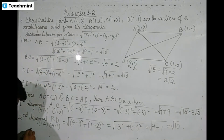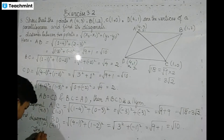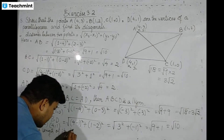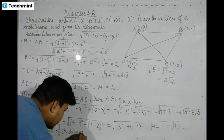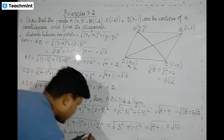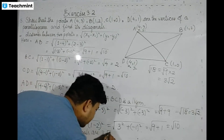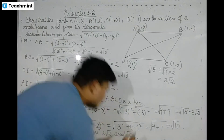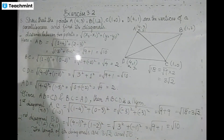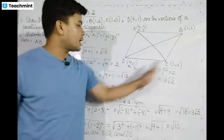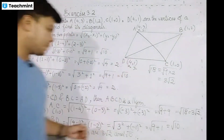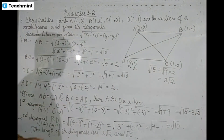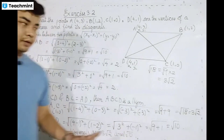Therefore, the length of its diagonals are 3 root 2 and root 10. So A, B, C, D are vertices of a parallelogram, since AB equals CD and BC equals AD. Therefore ABCD is a parallelogram, and the diagonals are 3 root 2 and root 10.